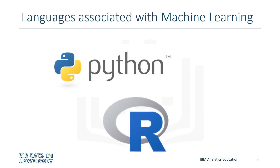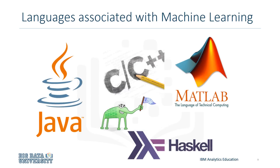Machine learning uses two primary languages, Python and R, as well as Java, C, C++, MATLAB, Haskell, and Lisp.